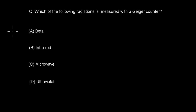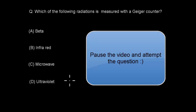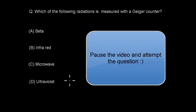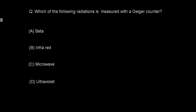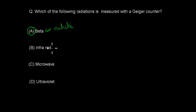Next question: which of the following radiations is measured with the Geiger counter? A. Beta, B. infrared, C. microwave, D. ultraviolet. The correct answer is beta. The Geiger counter measures both beta and gamma radiation. The other options — infrared, microwave, and ultraviolet — aren't the types of nuclear radiation covered in the nuclear chemistry chapter. The only real nuclear radiation types are alpha, beta, and gamma. Since beta is the only nuclear radiation listed, beta is correct.